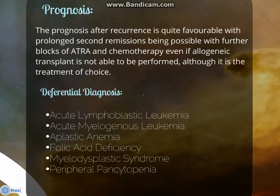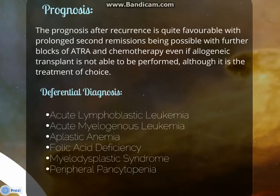The differential diagnosis for promyelocytic leukemia includes acute lymphoblastic leukemia, acute myelogenous leukemia, aplastic anemia, folic acid deficiency, myelodysplastic syndrome, and peripheral pancytopenia. This is the end of our presentation, done by a group of third-year medical students of Umukula University. Thank you for watching.